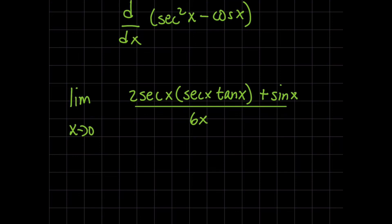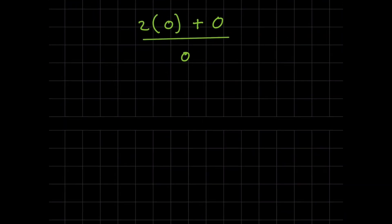So here you would plug in zero yet again, you would get two times secant of zero, which will give you two since secant of zero is one, all in parentheses, secant of zero is one times tangent of zero which is going to be a zero, plus sine of zero which is going to be a zero. And then the bottom will be a zero. Crazy, right? We get to use L'Hopital's rule a third time. Unbelievable. And I'm going to do just that.